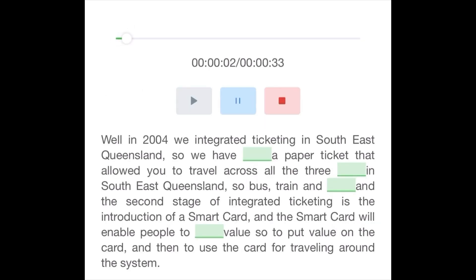In 2004, we integrated ticketing in Southeast Queensland, so we introduced a paper ticket that allowed you to travel across all three modes in Southeast Queensland: bus, train, and ferry. The second stage of integrated ticketing is the introduction of a smart card. The smart card will enable people to store value, so to put value on the card and then to use the card for traveling around the system.